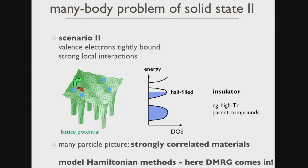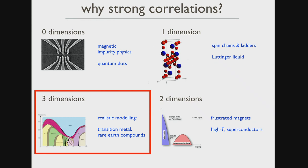These model Hamiltonians apply in many different situations: in zero dimensions — impurity physics, quantum dots; in one dimension — spin chains and ladders; frustrated magnets; and what I'll talk about tomorrow — realistic modeling of transition metals and rare earth compounds. My examples today will mainly be focused on one-dimensional systems.